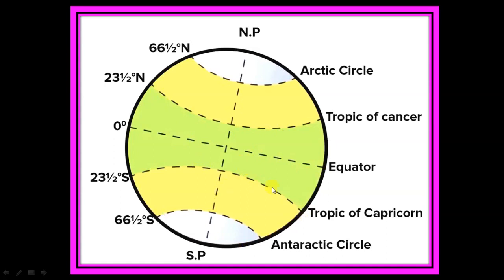This line is known as lines of latitude, and another name for this line is parallel. Every line situated in the northern hemisphere we write with N, and lines situated in the southern hemisphere we write with S. The first line is the Tropic of Cancer, situated at 23.5 degrees in the northern hemisphere. Similarly, 23.5 degrees on the southern side, there is a line known as the Tropic of Capricorn. Keep in mind these three lines: equator, Tropic of Cancer, and Tropic of Capricorn.